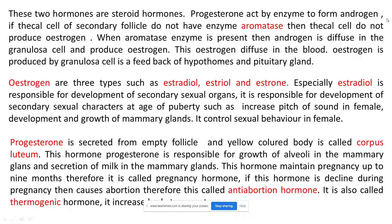Cholesterol is acted upon by enzymes to form androgens. If the thecal cells of the secondary follicle do not have the enzyme aromatase, they cannot produce estrogen. When the aromatase enzyme is present, estrogen is produced by the granulosa cells, and this estrogen in the blood provides feedback to the hypothalamus and pituitary gland.